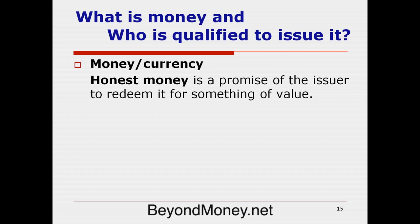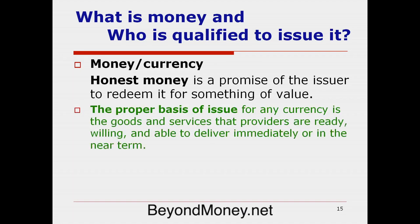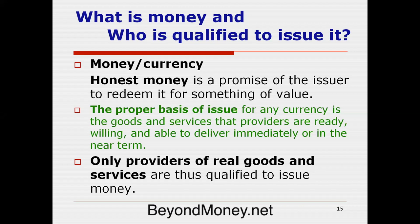The functions that money is supposed to serve — medium of exchange, store of value, and measure of value — that's not correct. These are three distinct functions that need three distinct mechanisms. Money or currency is strictly a medium of exchange, and to be honest, it must be the promise of an issuer who has something of value to redeem. The proper basis of issue of any currency is goods or services to deliver immediately or in the near future. Thus, only providers of real goods and services are qualified to issue money. Much of the fiat money coming into circulation is pseudo-money — it's equivalent to counterfeit, not intended to be redeemed.